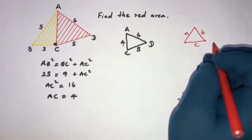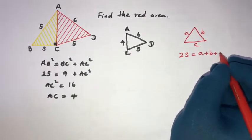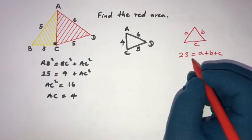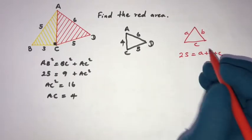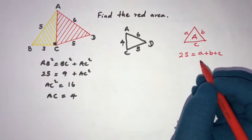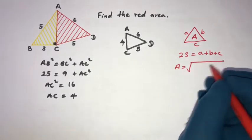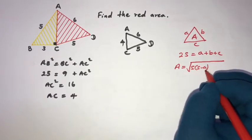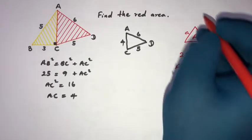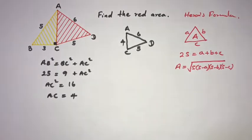For Heron's formula, if we take a triangle with side lengths A, B, and C, then 2S equals A plus B plus C, where the perimeter equals A plus B plus C. So S is the semi-perimeter. The area equals the square root of S times (S minus A) times (S minus B) times (S minus C). This is Heron's formula.